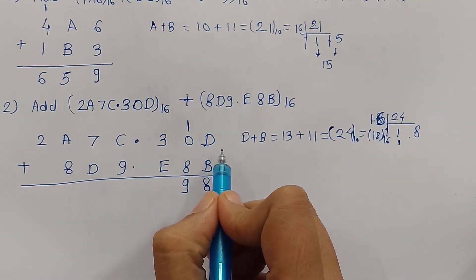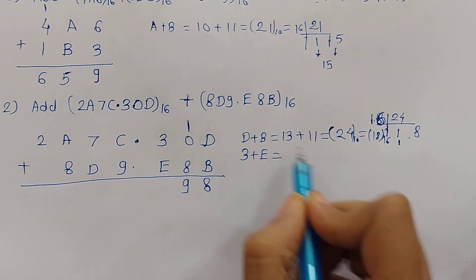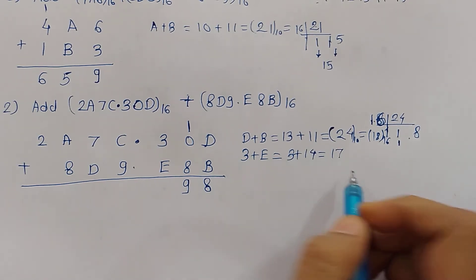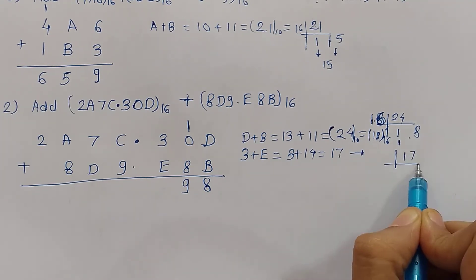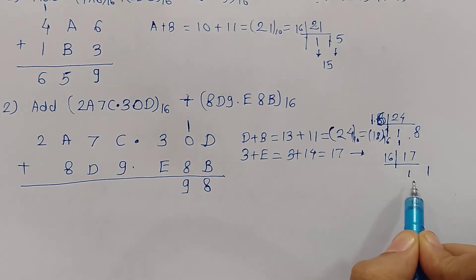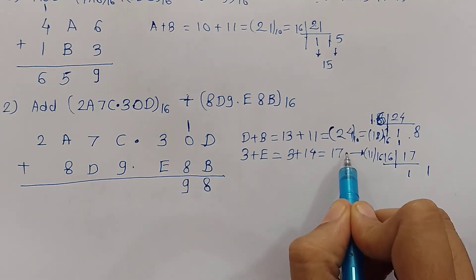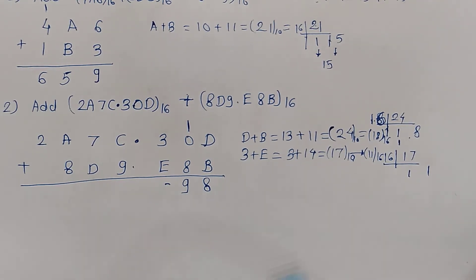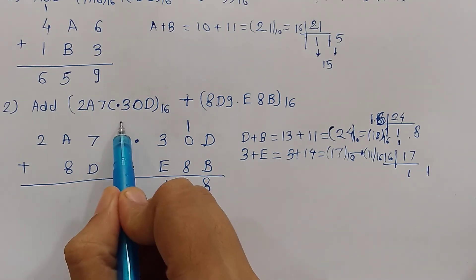Now 3 plus E: 3 is 3 and E is 14, so 3 plus 14 is 17. We convert 17 into hexadecimal, and the hexadecimal equivalent of 17 decimal is 11. So we write 1 and carry 1 to the next digit position.